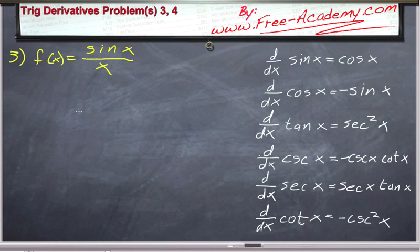Problem 3 presents us with an interesting dilemma. We have sine of x divided by x, and this should immediately ring a bell that this is f divided by g, which would imply that we use the quotient rule. Well, that's a perfectly legitimate way to go about this problem, but it's not the easiest.